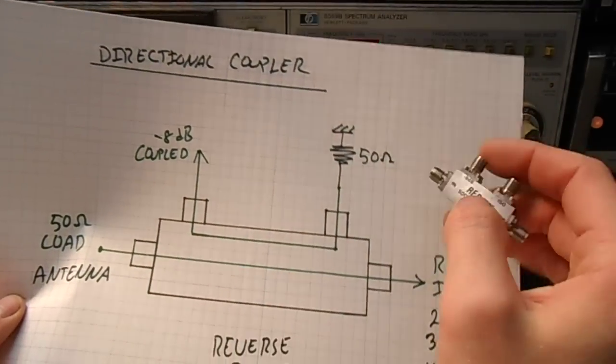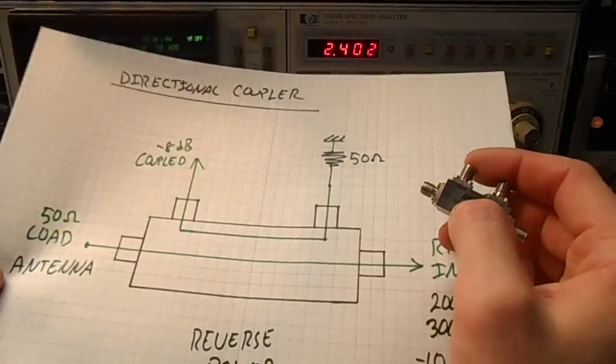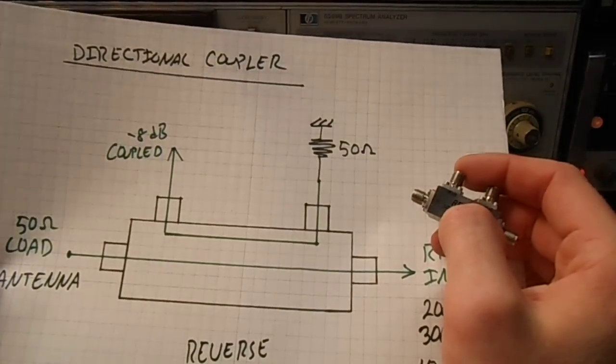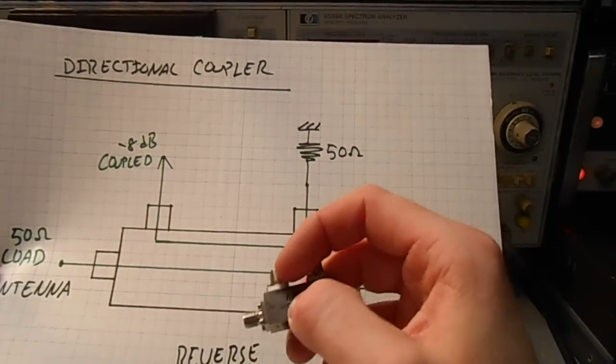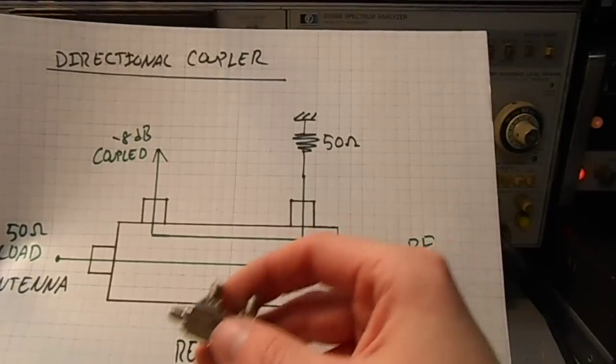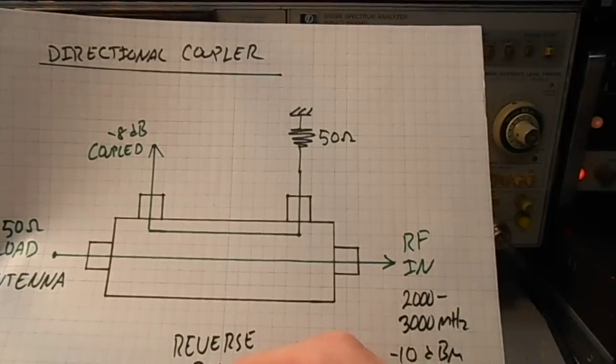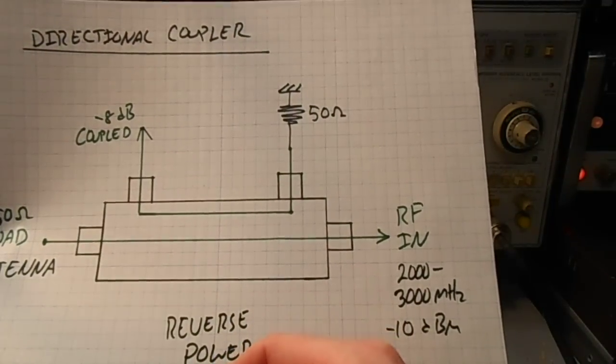This power factor is essentially the return loss of our load, which basically relates to the standing wave ratio, which tells you how well your antenna is matched to your source impedance.